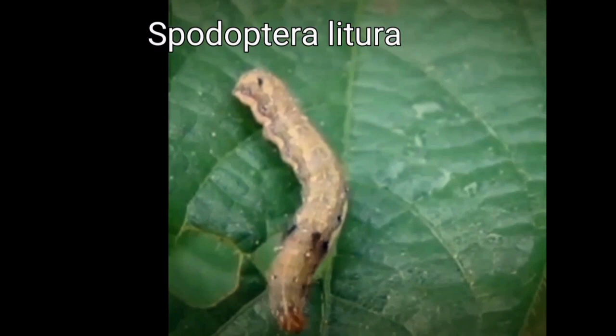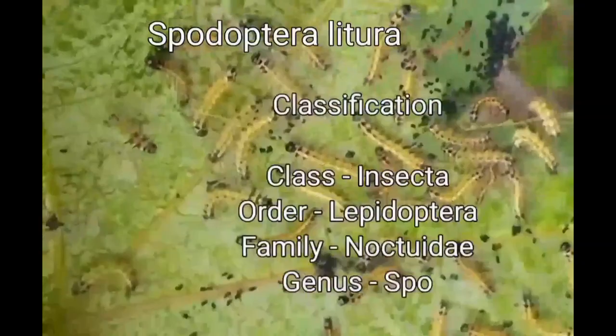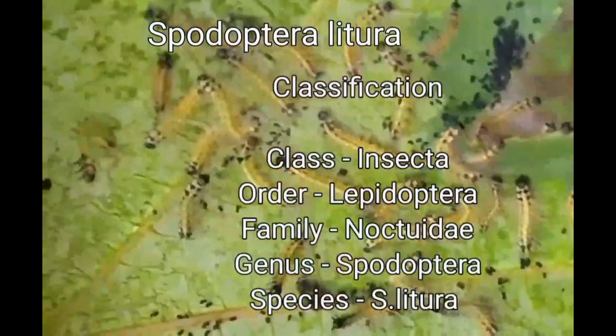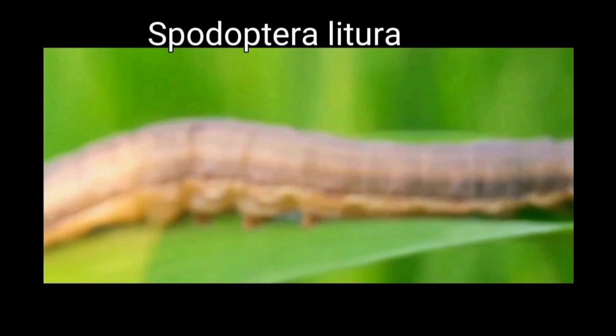Let us begin with the classification of Spodoptera litura. It belongs to class Insecta, order Lepidoptera, family Noctuidae, genus Spodoptera, and species S. litura. The host plants of Spodoptera include cotton, tobacco, and other grass crops.